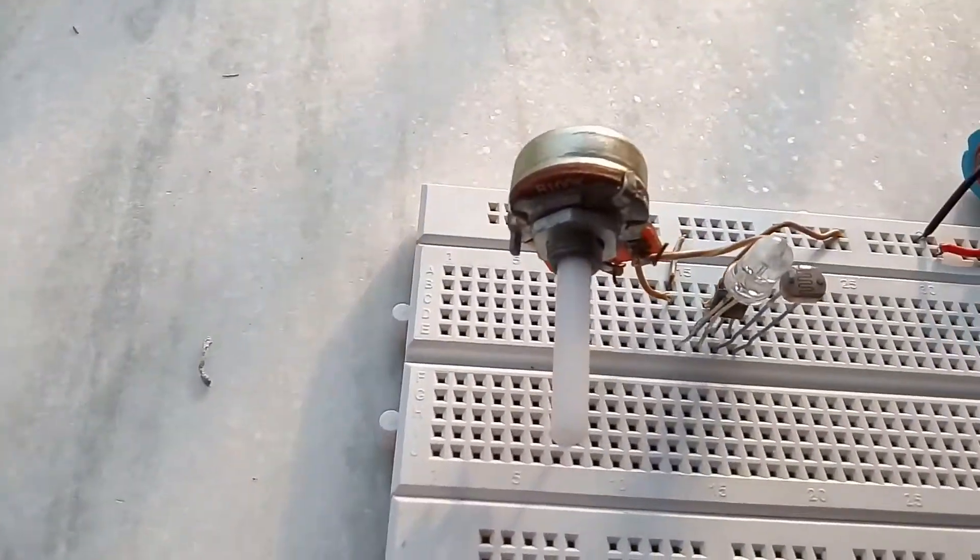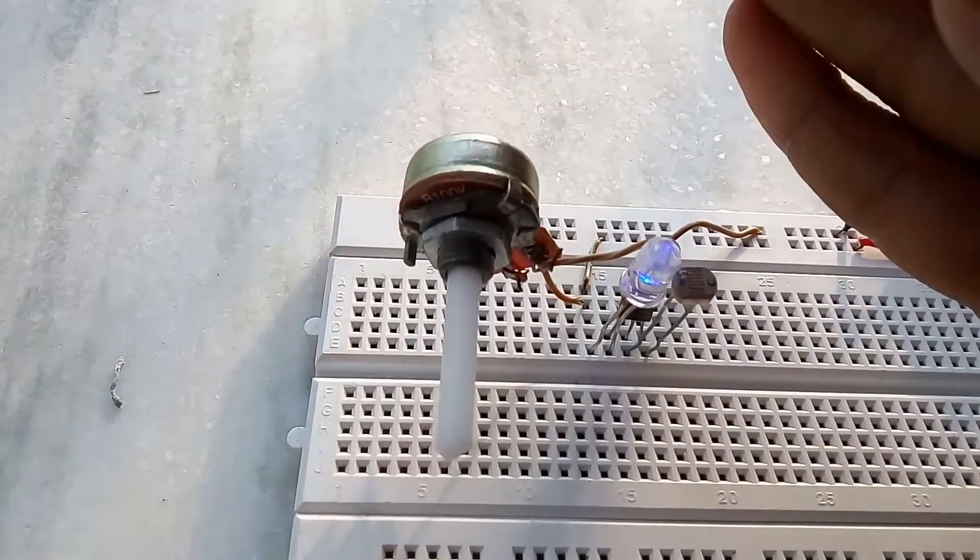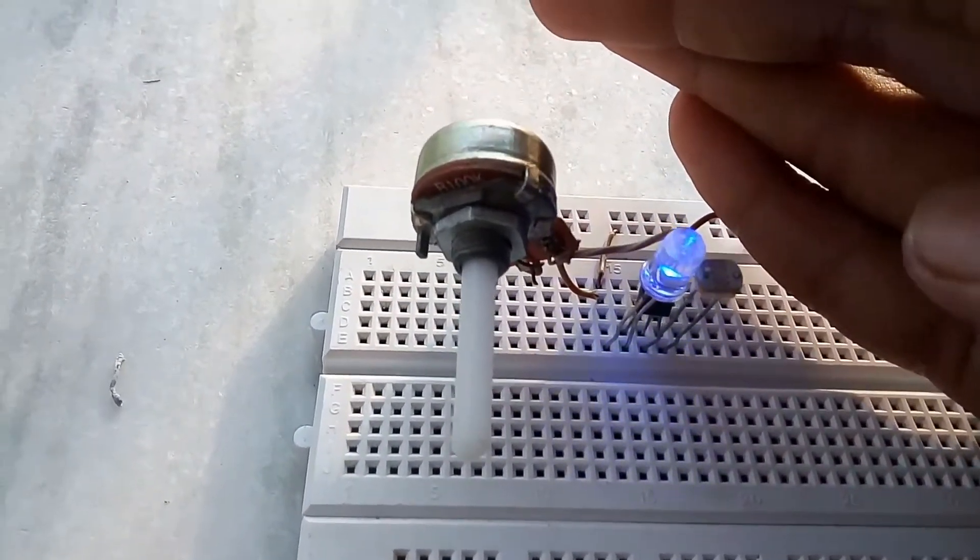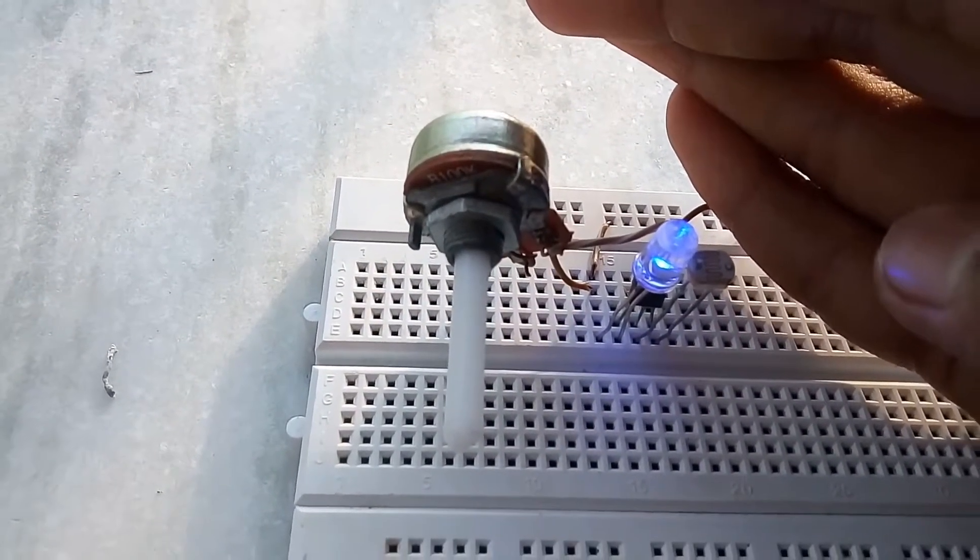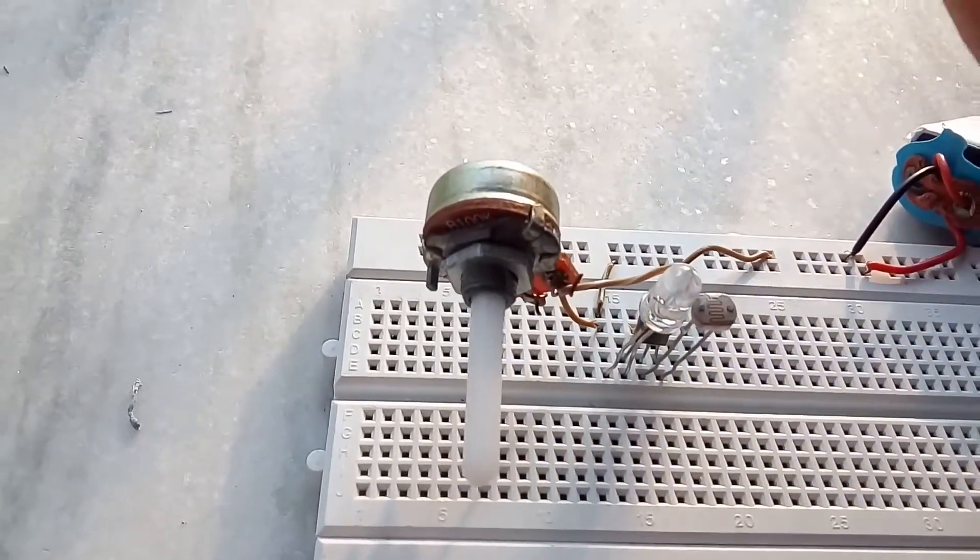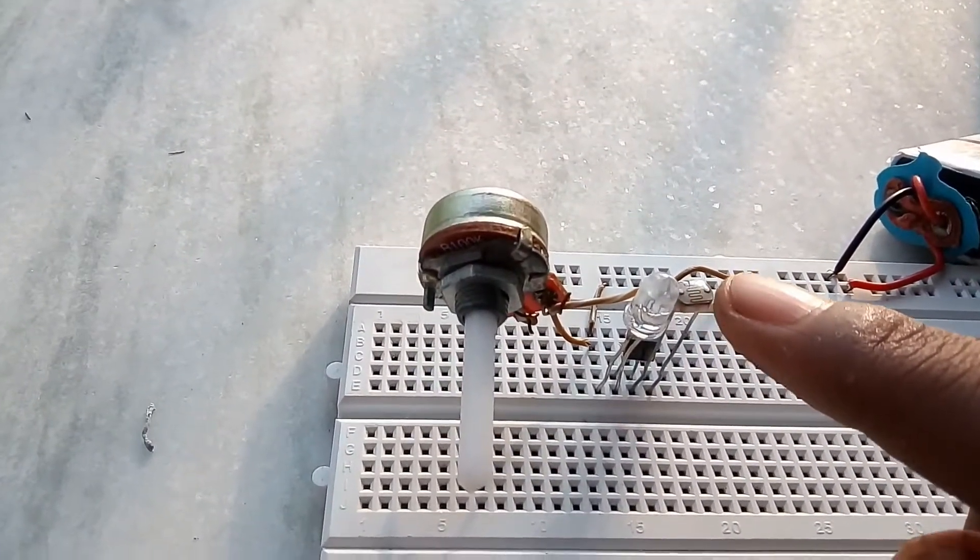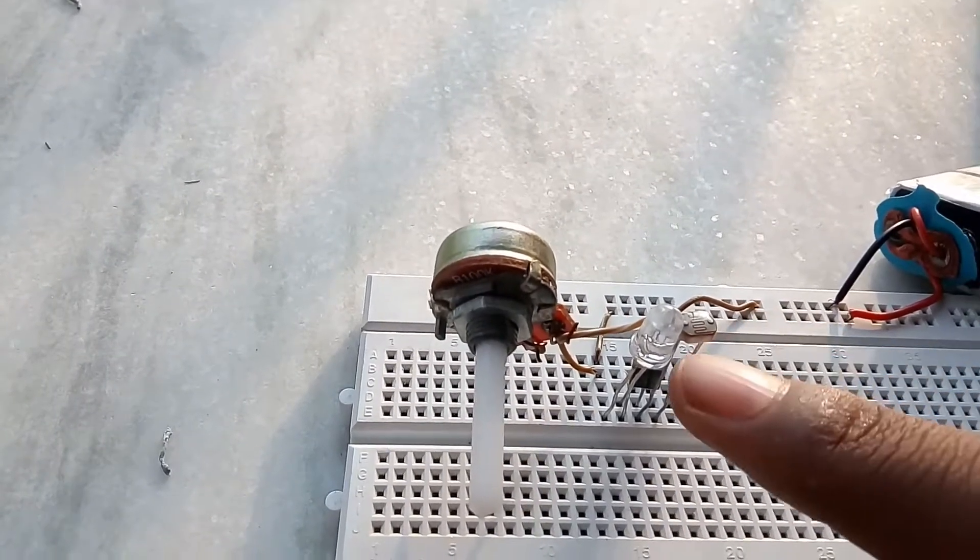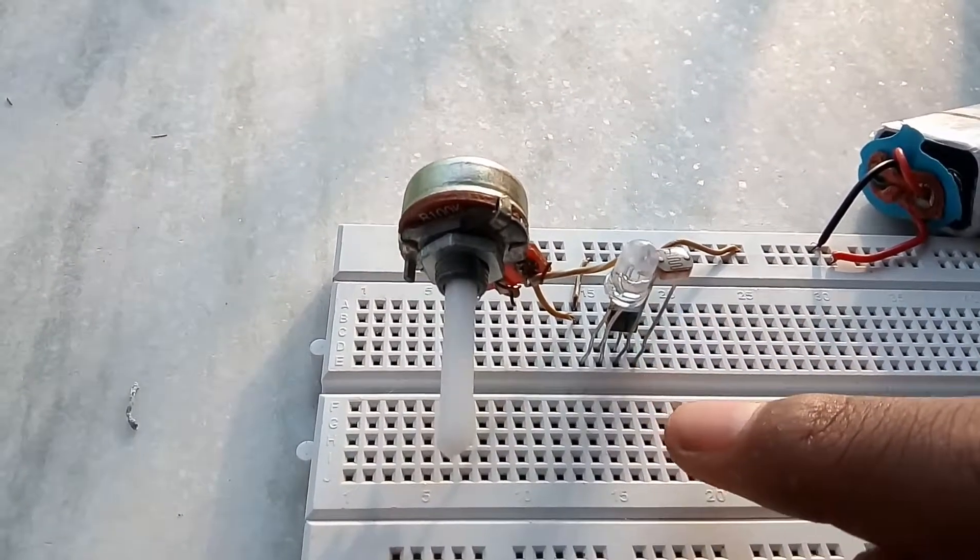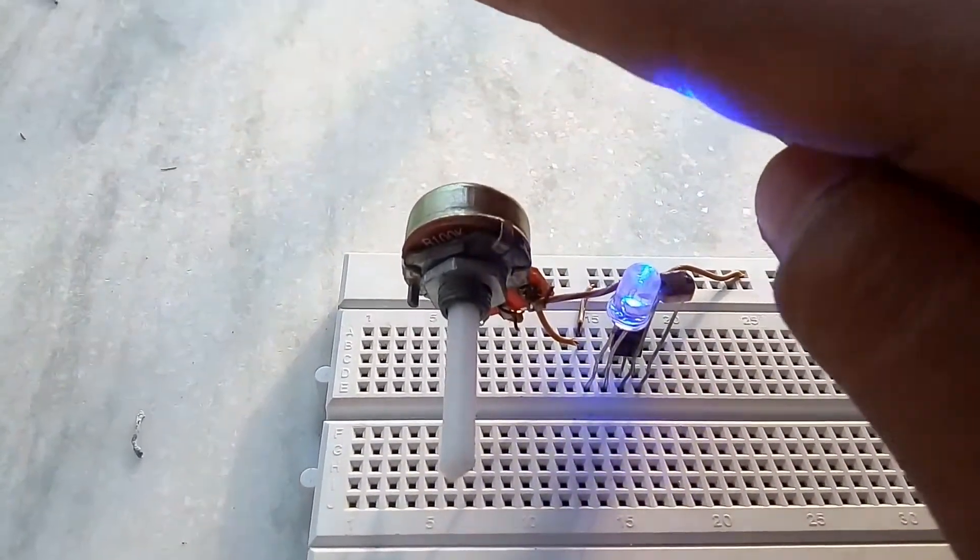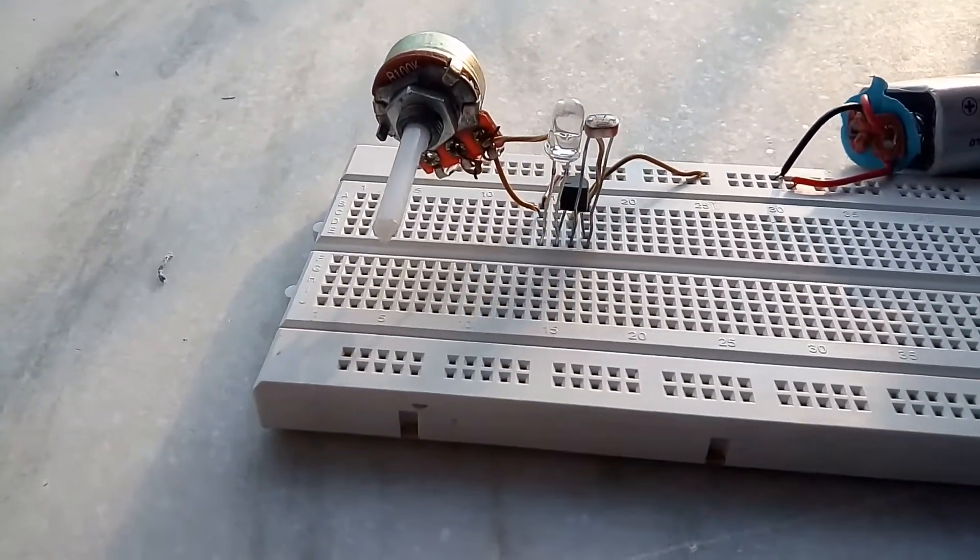After connecting, see that when I hide the light-dependent resistor the light glows. This means when the light is not falling on the light-dependent resistor it detects that there is darkness, so it turns on the LED. You can adjust the range by this potentiometer according to your requirement.